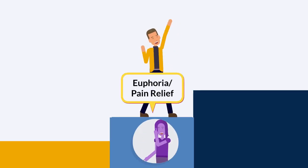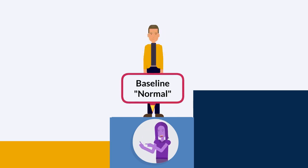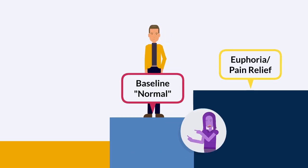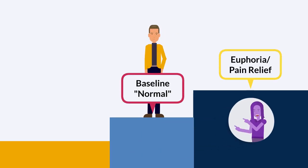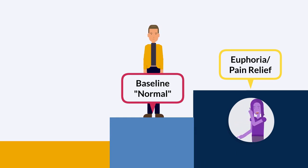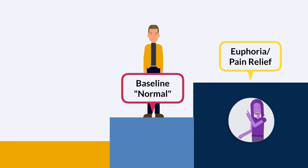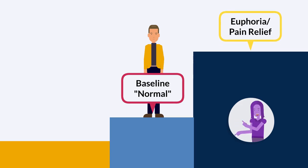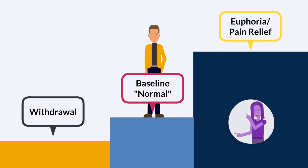As a result, what used to relieve pain and cause euphoria now just keeps the individual at a baseline. To exceed the baseline and have the positive effects, more of the opioid is needed. If the body dips below its baseline, withdrawal begins.